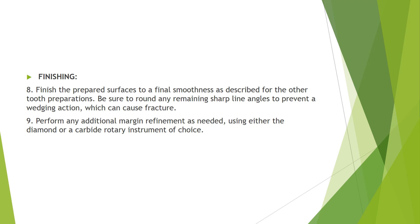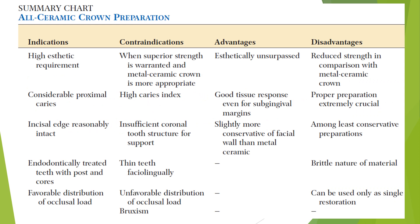Here we can see an all-ceramic crown preparation. To summarize: indications include high aesthetic requirements, considerable proximal caries, reasonably intact incisal edge, endodontically treated teeth with post and core, and favorable distribution of occlusal load. Contraindications include when superior strength is warranted and metal-ceramic is more appropriate, high caries index, insufficient coronal tooth structure, thin teeth faciolingually, and unfavorable distribution of load.